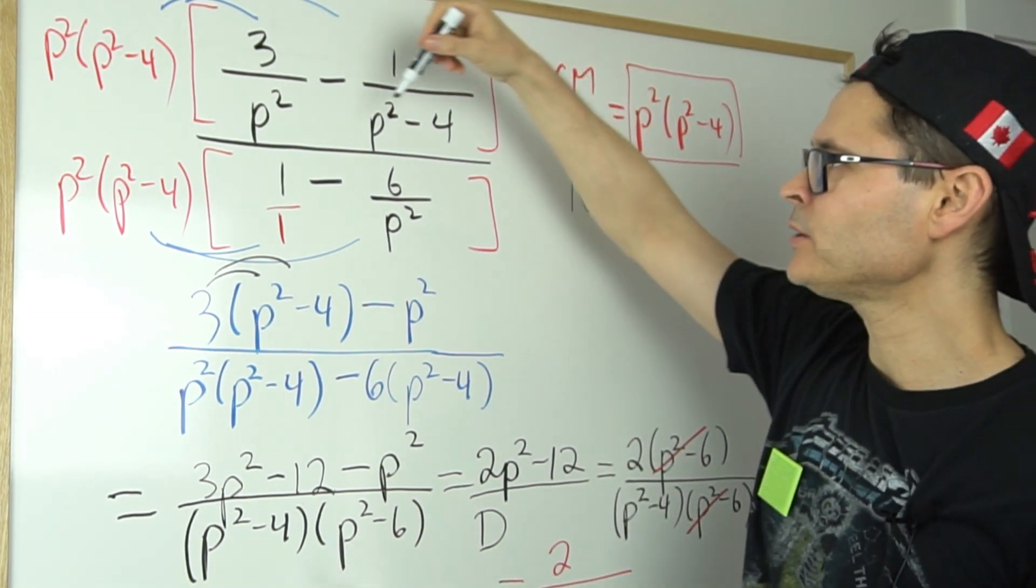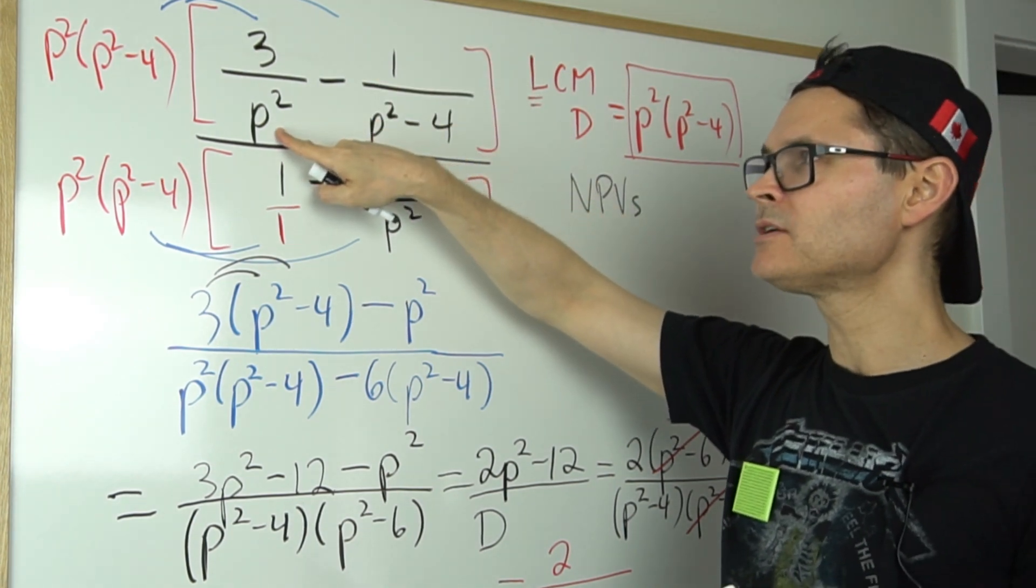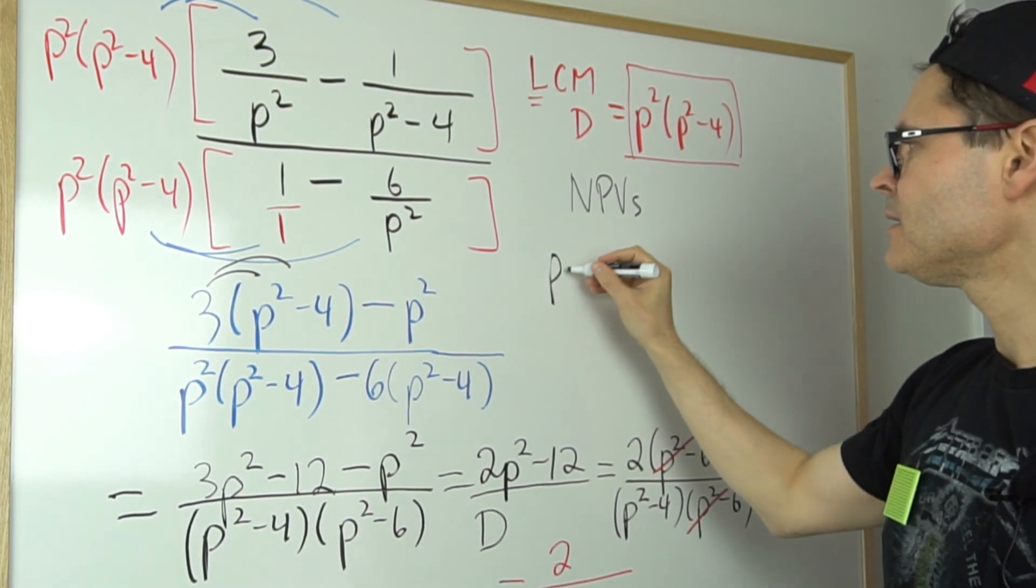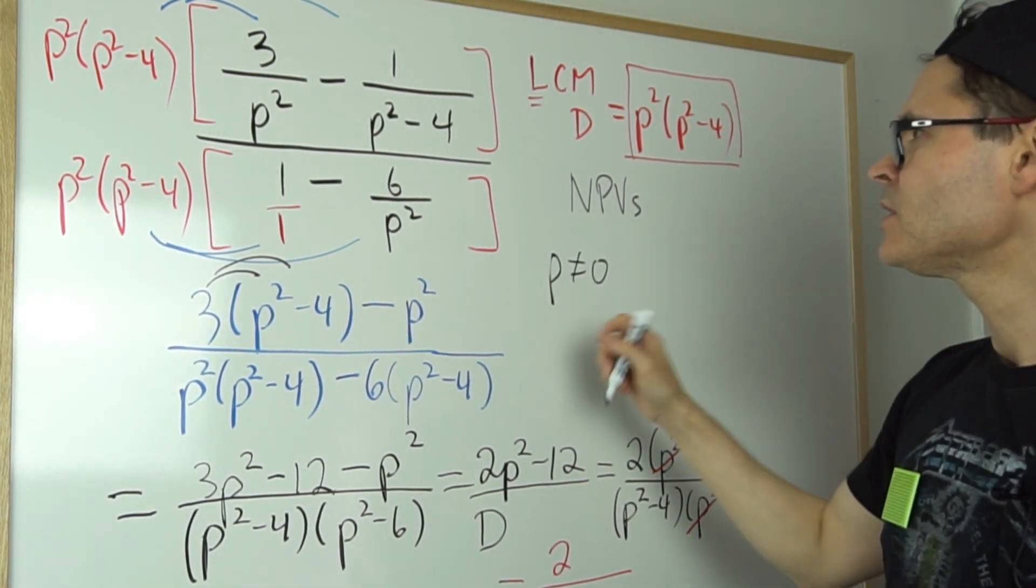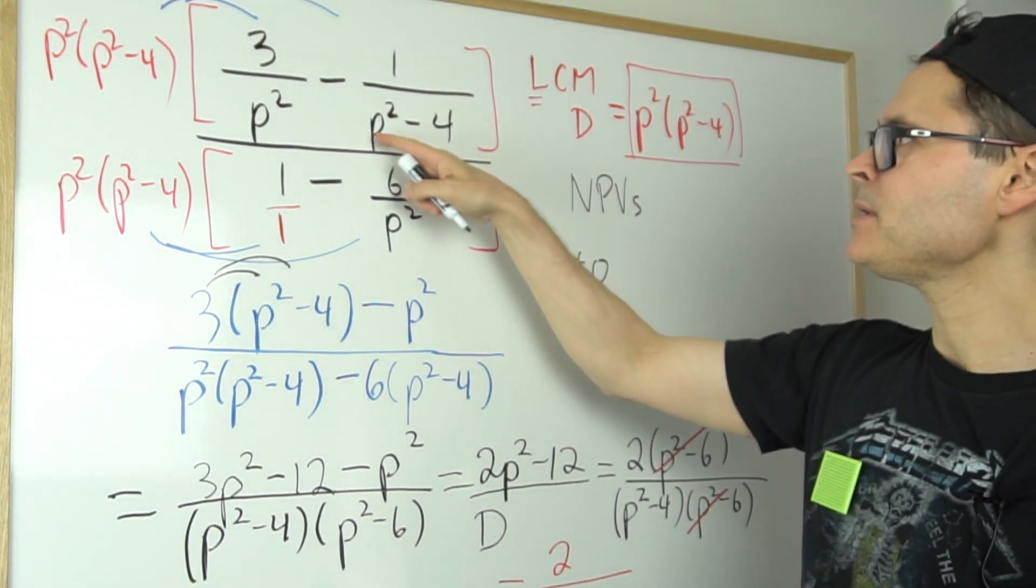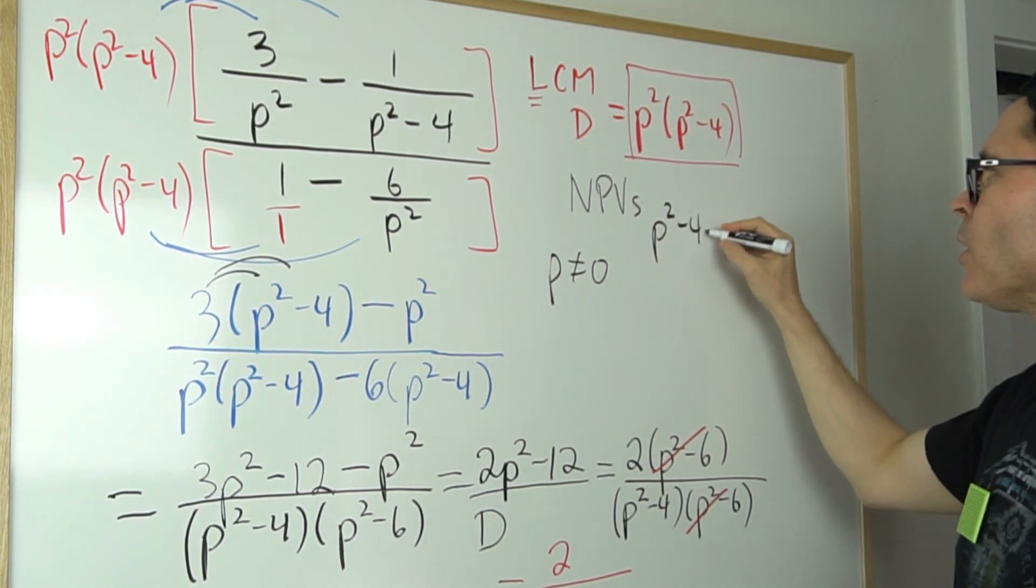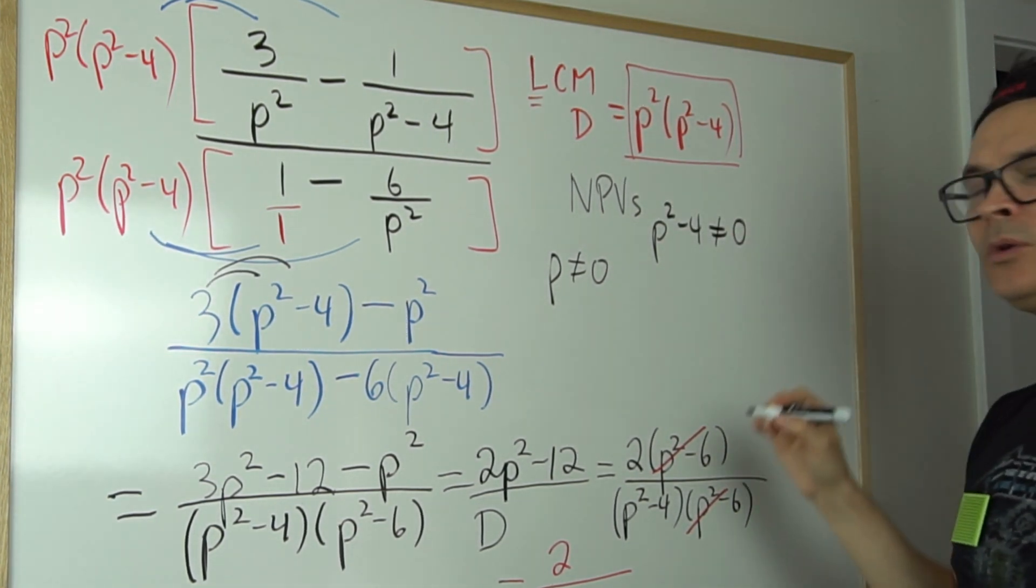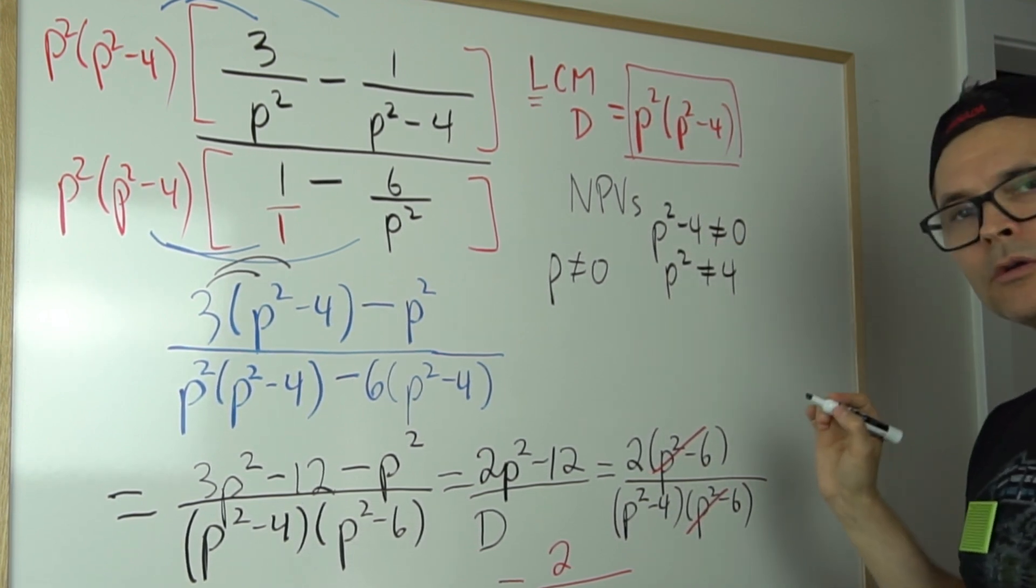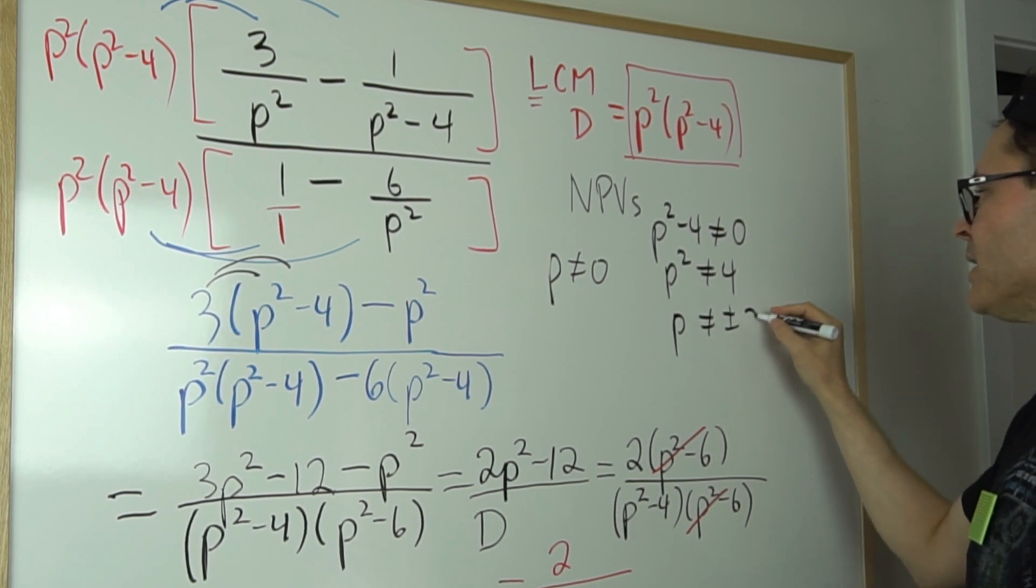So to do that, we can look at all of these individual denominators. So p squared—well, that's p times p, so I know that p cannot be equal to zero. You're looking at the individual denominators, do you see? And the same here—p squared minus four. So p squared minus four is not allowed to be equal to zero. Well, that implies that p squared cannot be equal to four, or p cannot be equal to plus or minus two.